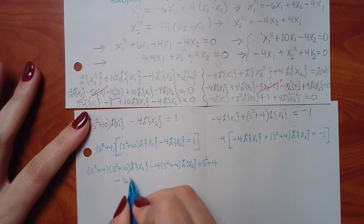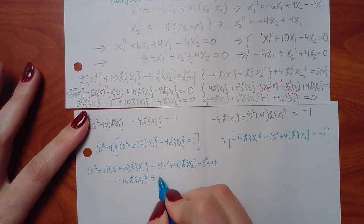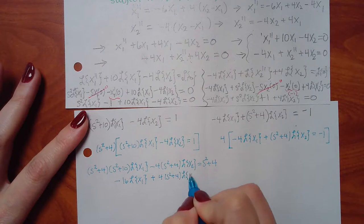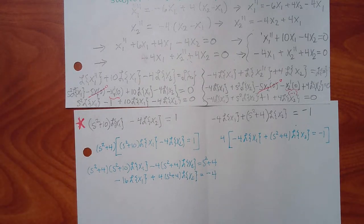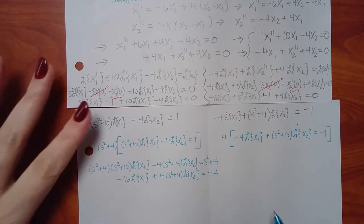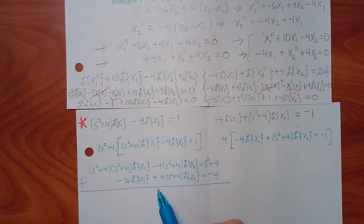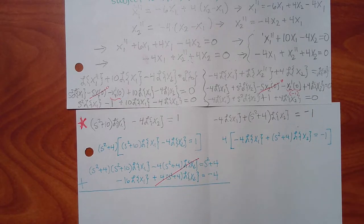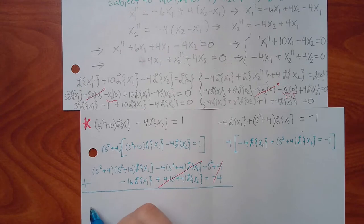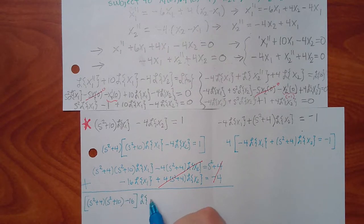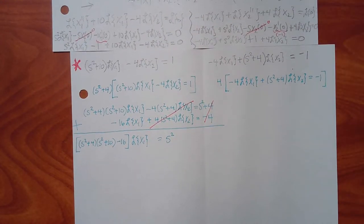Now combining these, the L{X2} terms are completely the same but with opposite signs — those wipe each other out, leaving just the L{X1} terms. The right-hand sides also combine. So I have: [(S squared plus 4)(S squared plus 10) minus 16] L{X1} equals S squared plus 4 minus 4, which is just S squared. Now to solve for L{X1}, I divide by everything inside the brackets.